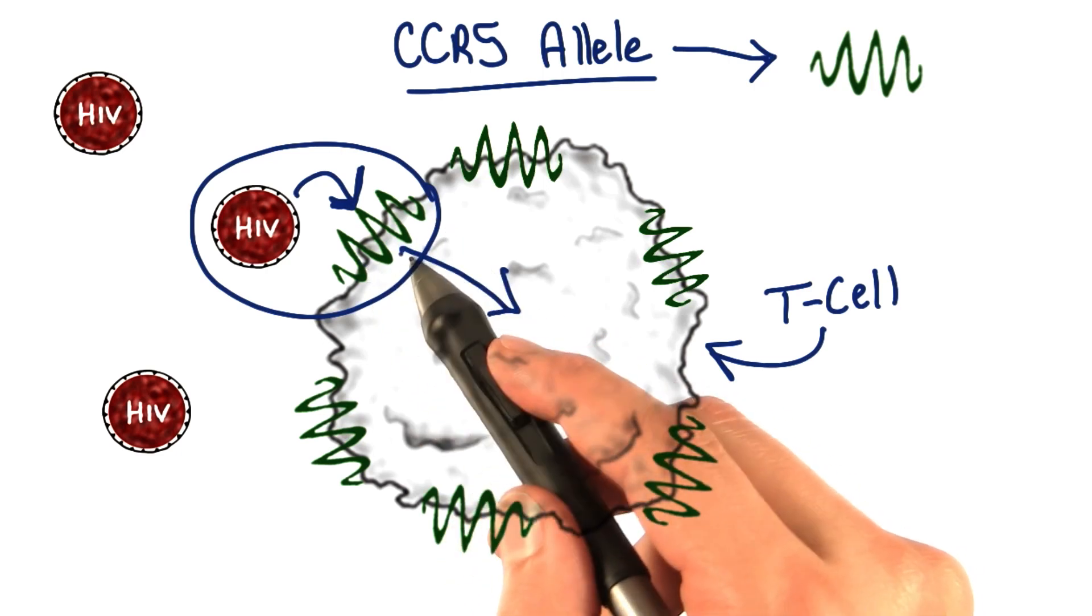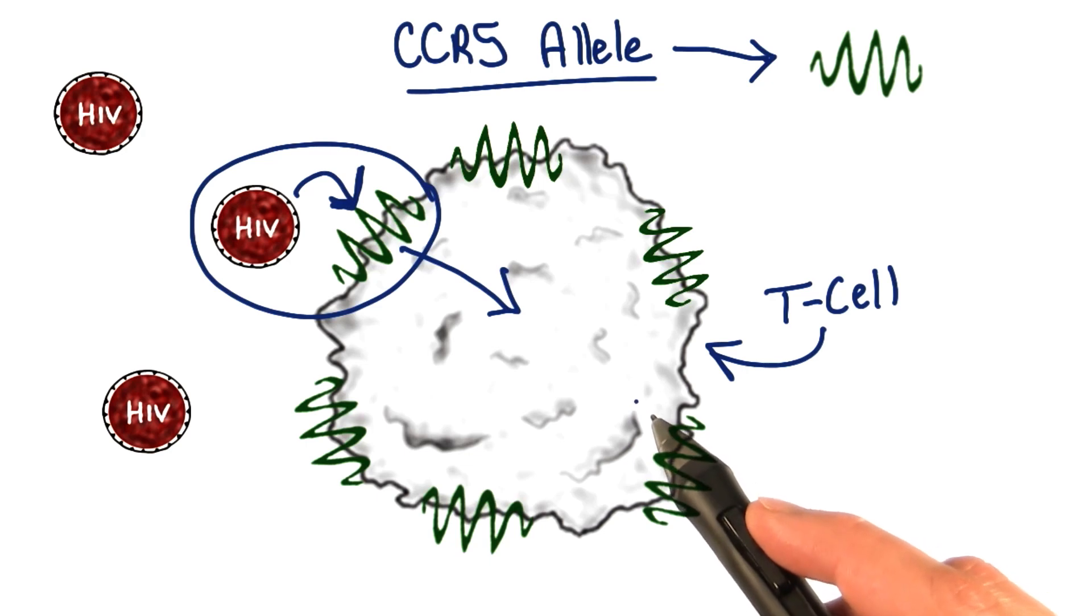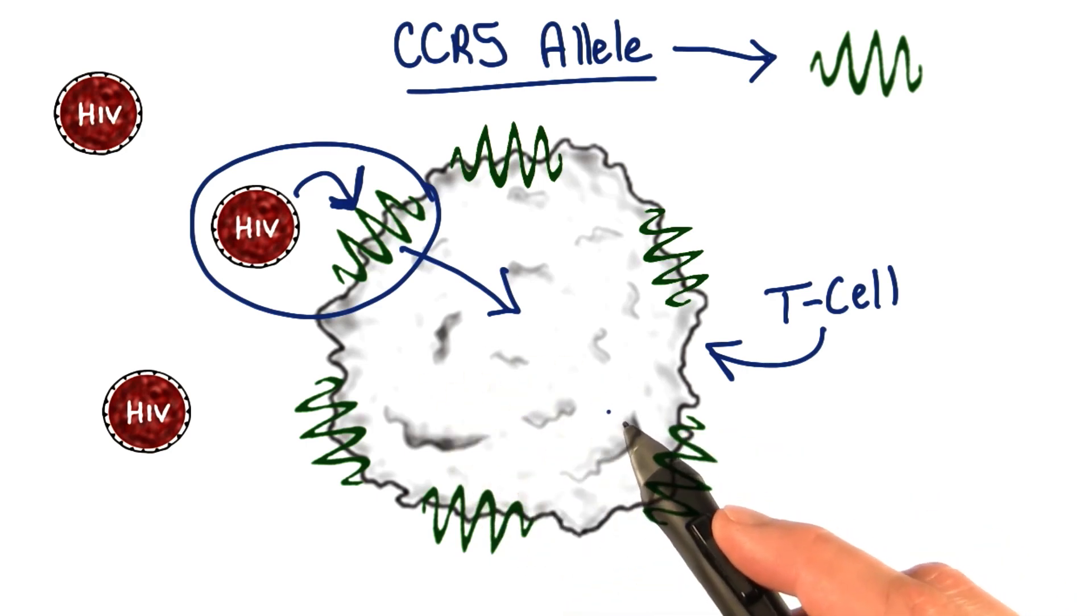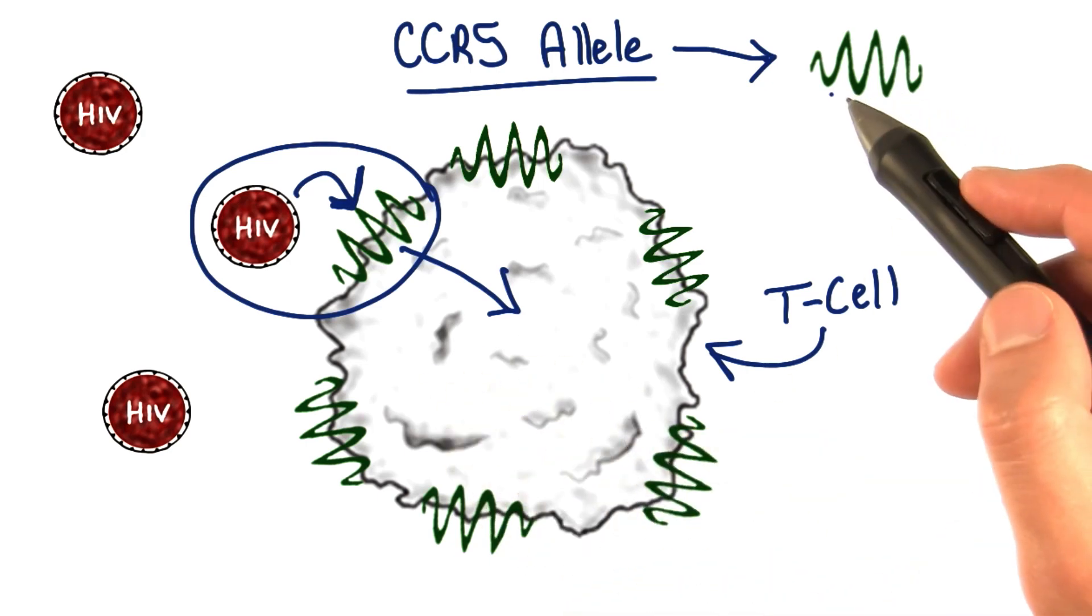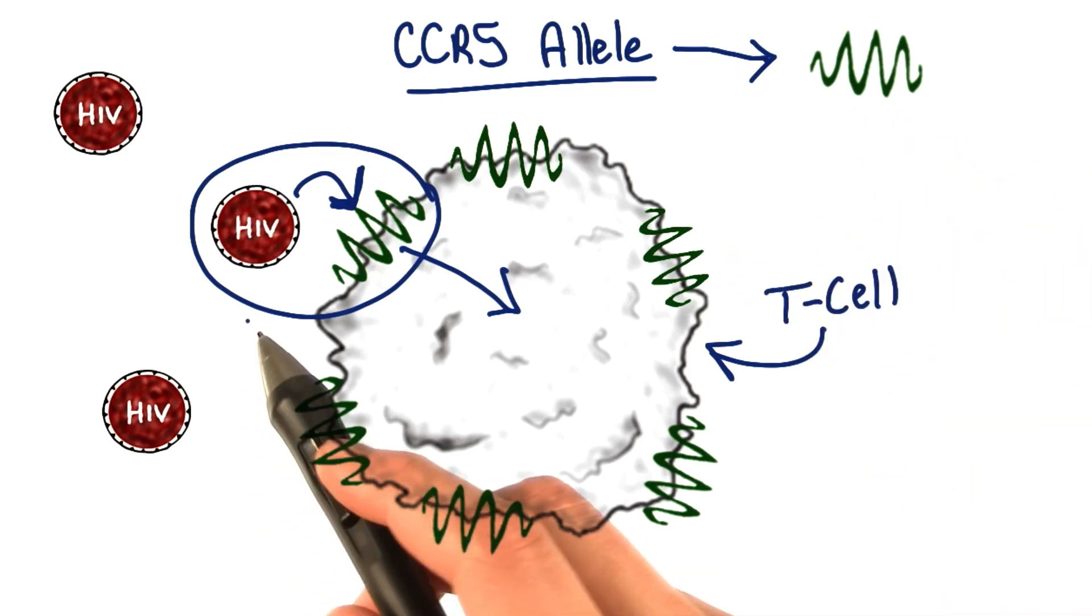It hijacks this protein and uses it to get inside the T cell, infect it, and then infect the entire immune system. So if you have a normally functioning CCR5 allele, then you're at risk for HIV infection.